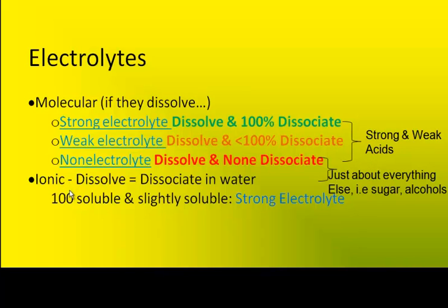Then there's ionic compounds, which are the epitome of electrolytes, provided that the ionic compound dissolves and then dissociates. There are quite a number of ionic compounds that are insoluble in water, meaning they will not dissolve and therefore not dissociate into ions. We will not consider those types in this class. For our purposes, all ionic compounds are strong electrolytes.